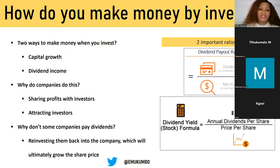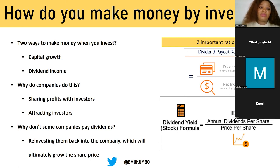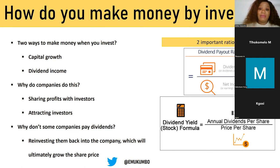How do you make money when investing? There are two ways. First, capital growth — if you bought property at 1 million and it's now worth 1.6 million, the 600,000 is your capital growth. On shares, it's the cost price you paid versus what it's trading at now — ideally the current price is higher than your cost price. Second, dividend income. Companies pay dividends to share profits with investors and attract new investors. Growth companies often don't pay dividends because they reinvest back into the business.